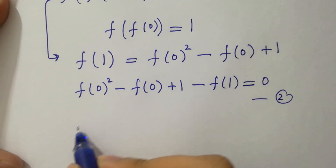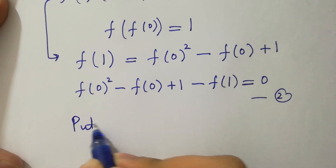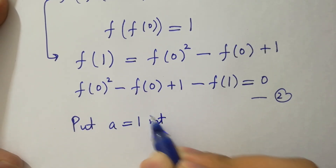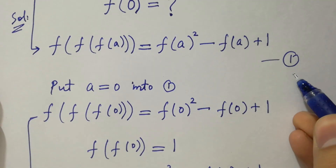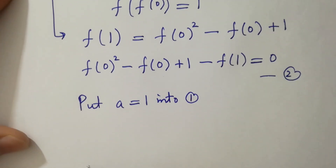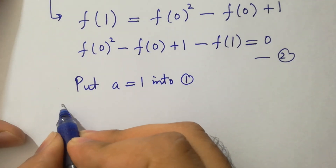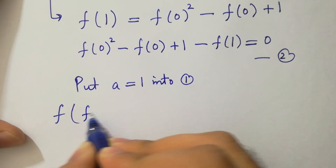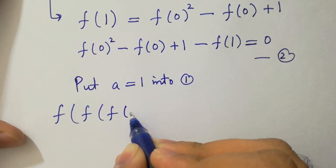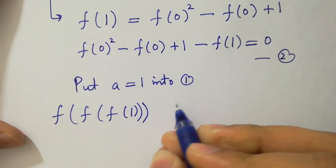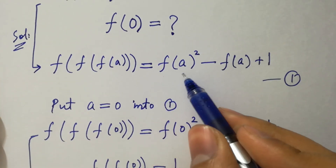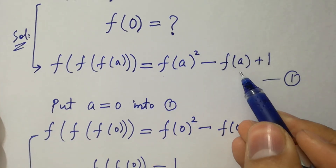Now put a equal to 1 into the first equation. We have f of f of f of 1 equal to f of 1 squared minus f of 1 plus 1.